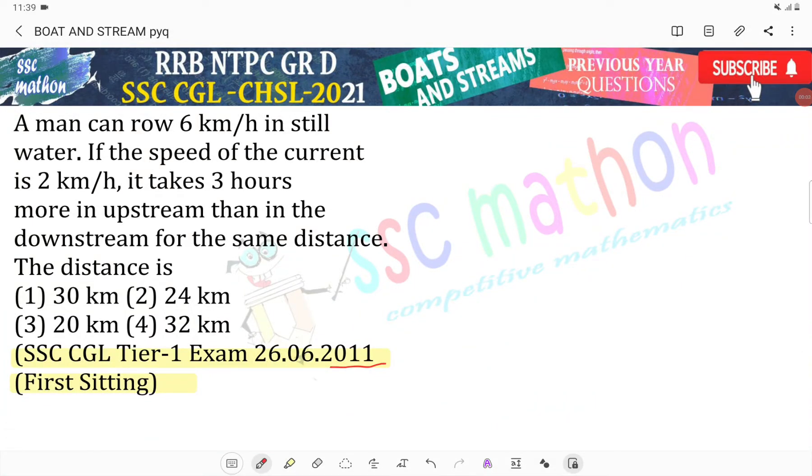Hello everyone, welcome back to SSC Math and RRB NTPC Group D for the previous year question. A man can row 6 km per hour in still water. If the speed of the current is 2 km per hour, it takes 3 hours more in upstream than in downstream for the same distance. We have to find the distance.